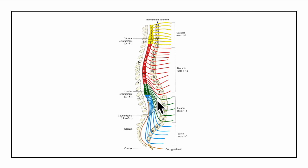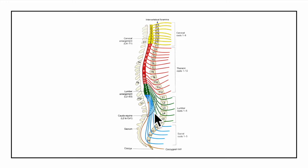A group of nerves — L2 to L5, S1 to S5, and the coccygeal nerves — lie almost vertically around the filum terminale. These are called the cauda equina, as they resemble a horse's tail.